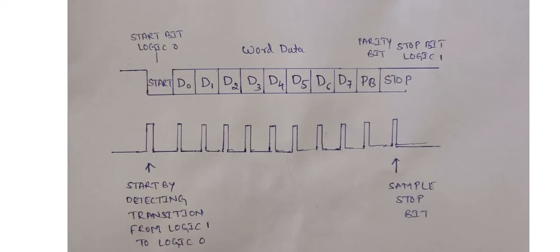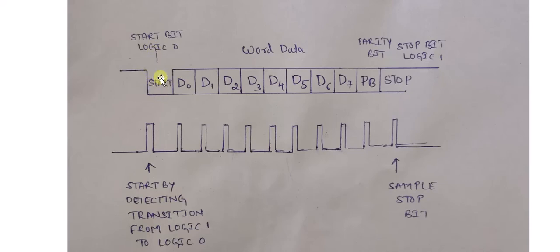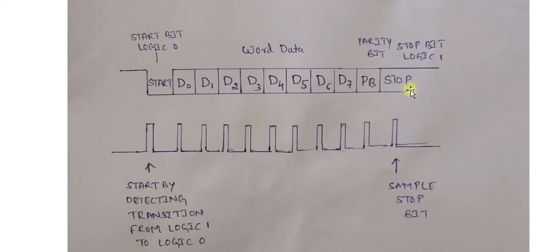Now we will concentrate on the UART frame format, which is very important. The frame format and speed are configurable, but this is the standard frame format. As you can see, it consists of: a start bit, data bits D0 to D7, a parity bit (PB), and a stop bit. I will explain each of these in detail.